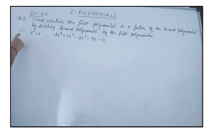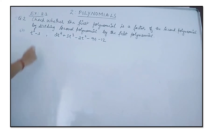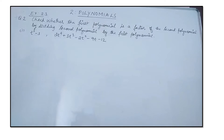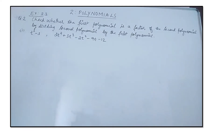The first subdivision: the first polynomial is t² − 3, and the second polynomial is 2t⁴ + 3t³ − 2t² − 9t − 12. The procedure is to divide the second polynomial by the first polynomial and check the remainder.